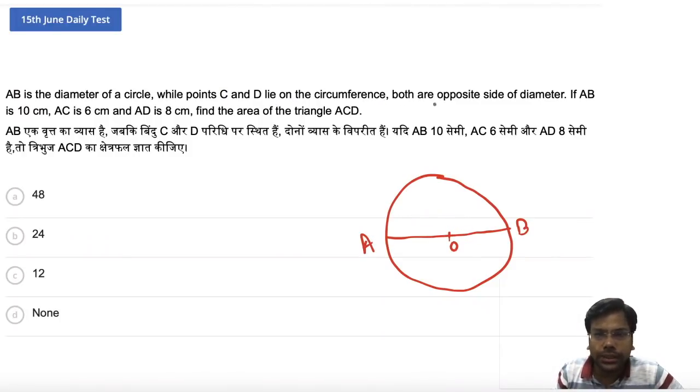Points C and D lie on the circumference, both on opposite sides of the diameter. So this is C, this is D. If AB is 10 cm, the complete diameter is 10 cm. AC is 6 cm and AD is 8 cm. We have to find the area of triangle ACD.